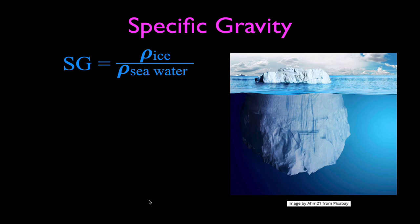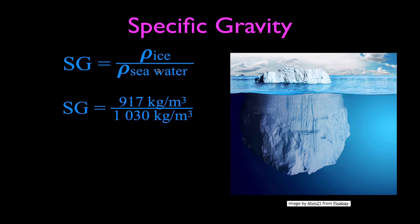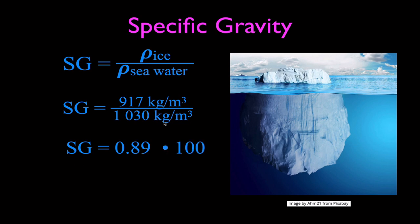A common example of this concept is the iceberg. People often say 90% of an iceberg is underwater, and we can verify this by calculating the specific gravity of ice in seawater. The density of ice is 917 kilograms per meter cubed — water is unusual in that it becomes less dense as it freezes below 4 degrees. Seawater, which contains salt and other substances, has a density of about 1,030. Dividing 917 by 1,030 gives 0.89, and multiplying by 100 confirms that about 89–90% of the iceberg is underwater.